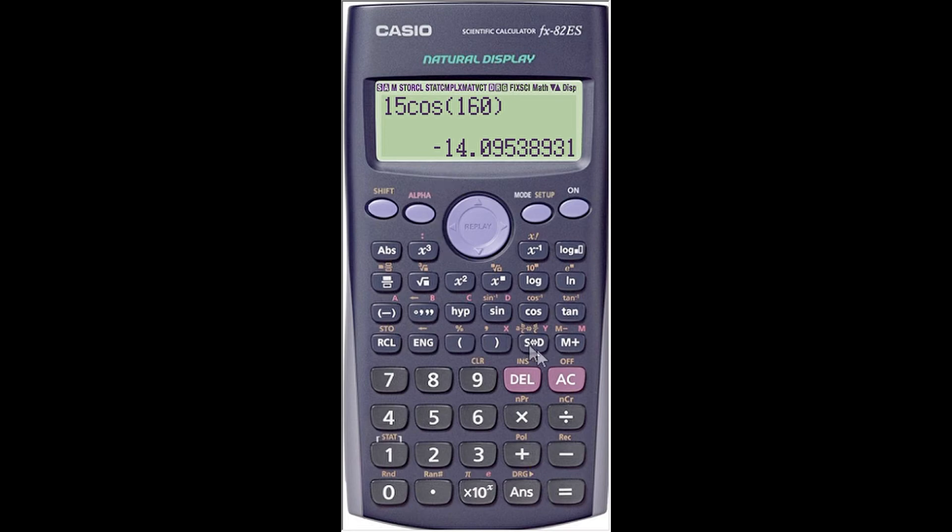Okay, now I'm going to do the next operation. That is 15, that is the magnitude of the vector, times the sine of 160 degrees. Okay, so that answer must be 5.1303. Remember, I told you we're going to use four digits and make sure that your calculator is in degrees.